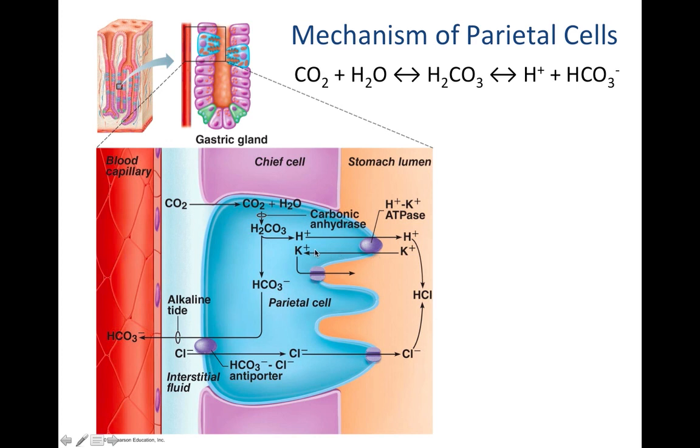The potassium comes into the parietal cell, but you can see it just moves right back out through this ion channel. So the potassium is more or less just recycled, going in and out. The hydrogen ion remains in the stomach lumen. And you can see, ultimately, it will be the H part of our HCl, hydrochloric acid.